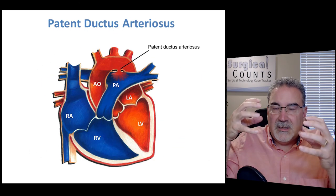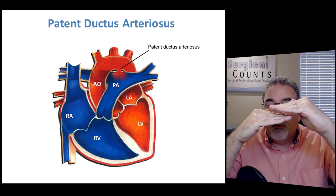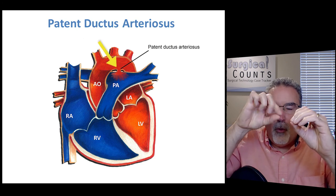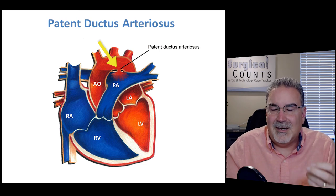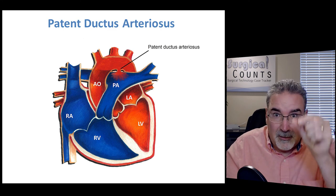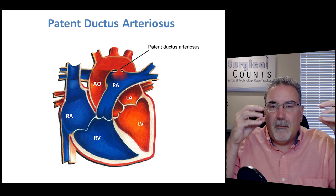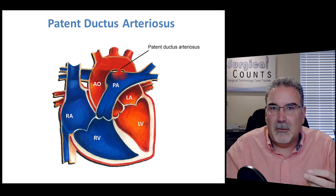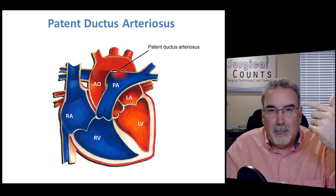Sometimes instead of a hole between two chambers, there can be a hole between the aorta and the pulmonary artery. These two vessels normally sit right next to each other, and sometimes they don't fully separate - leaving a little duct connecting them. This is called a patent ductus arteriosus - arteriosus referring to arteries, ductus being the little duct between them, and patent meaning fluid can flow through the lumen from one to the other. To fix this, we simply close that little duct off and let the blood flow where it should.